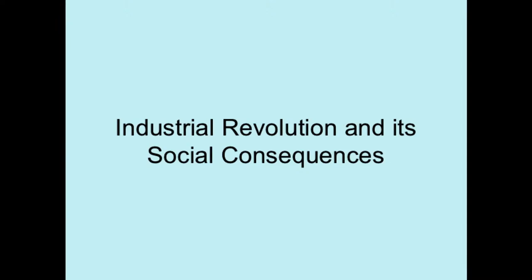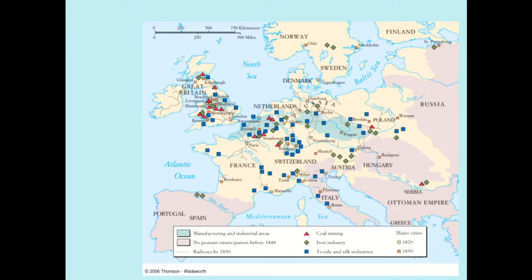The first period was very important when the whole thing emerged — between the 1760s and roughly the 1830s. This map shows the major manufacturing and industrial areas, coal mining areas, and iron industry. If you look at this map, you will see it mostly covers the areas of Northern and Central Europe, with only a few things in Southern Europe. That's where the Industrial Revolution was centered.